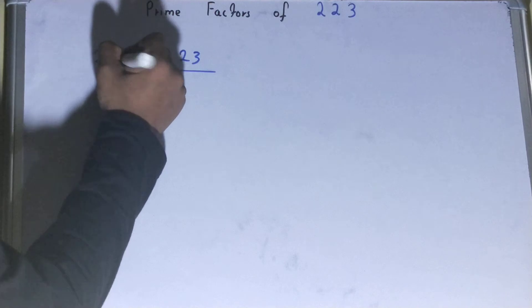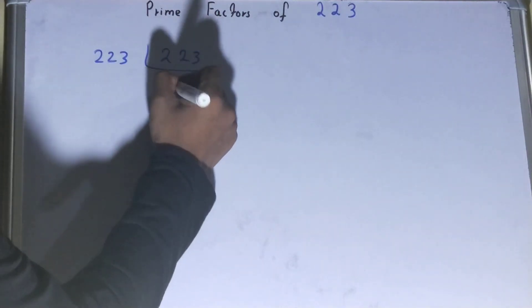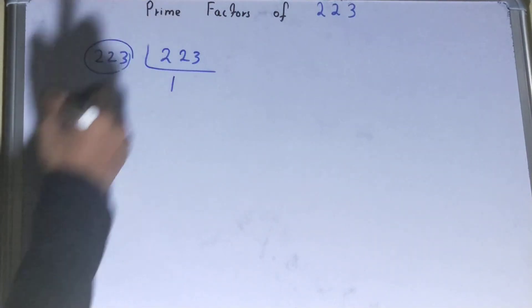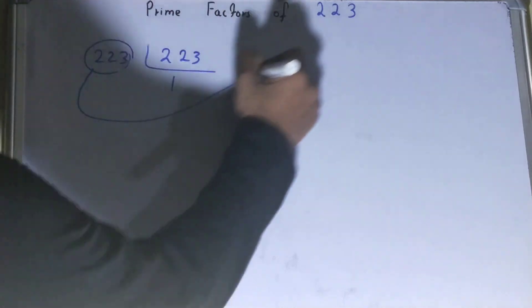you get 1, your work is done. And whatever you have on the left hand side will be your set of prime factors for the number 223.